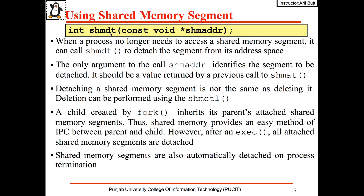A child created by fork inherits its parent's attached shared memory segments, thus shared memory provides an easy method of IPC between the parent and child. One important point to keep in mind is that after an exit, all attached shared memory segments are detached. Shared memory segments are also automatically detached when a process terminates.